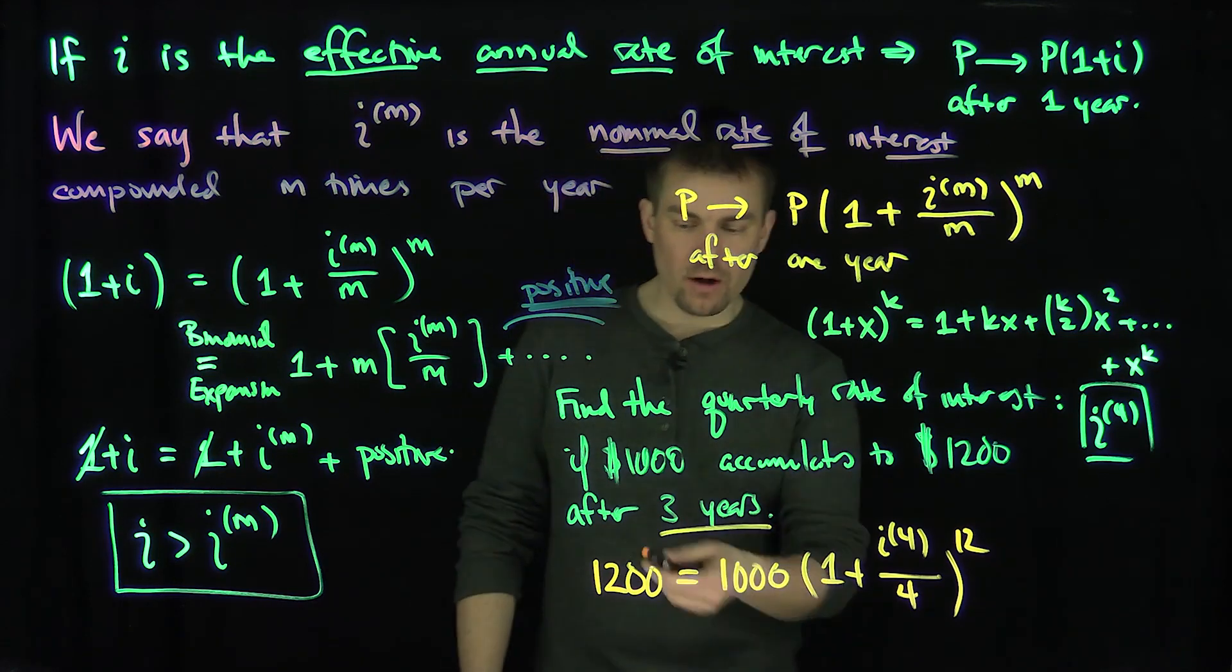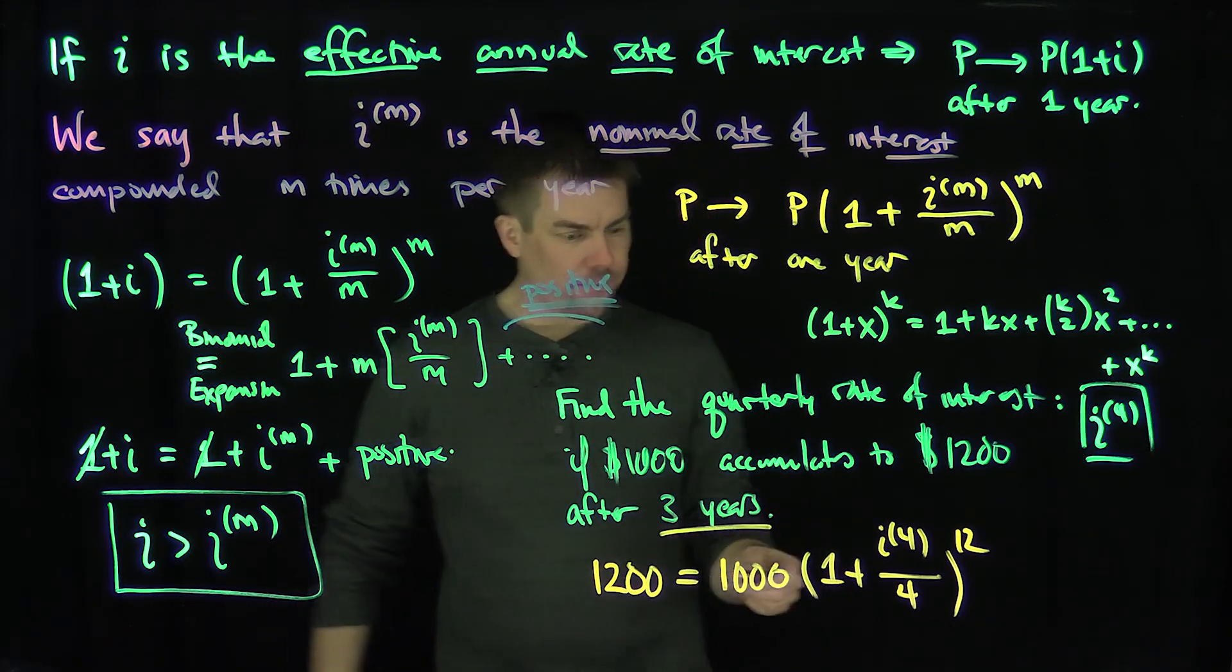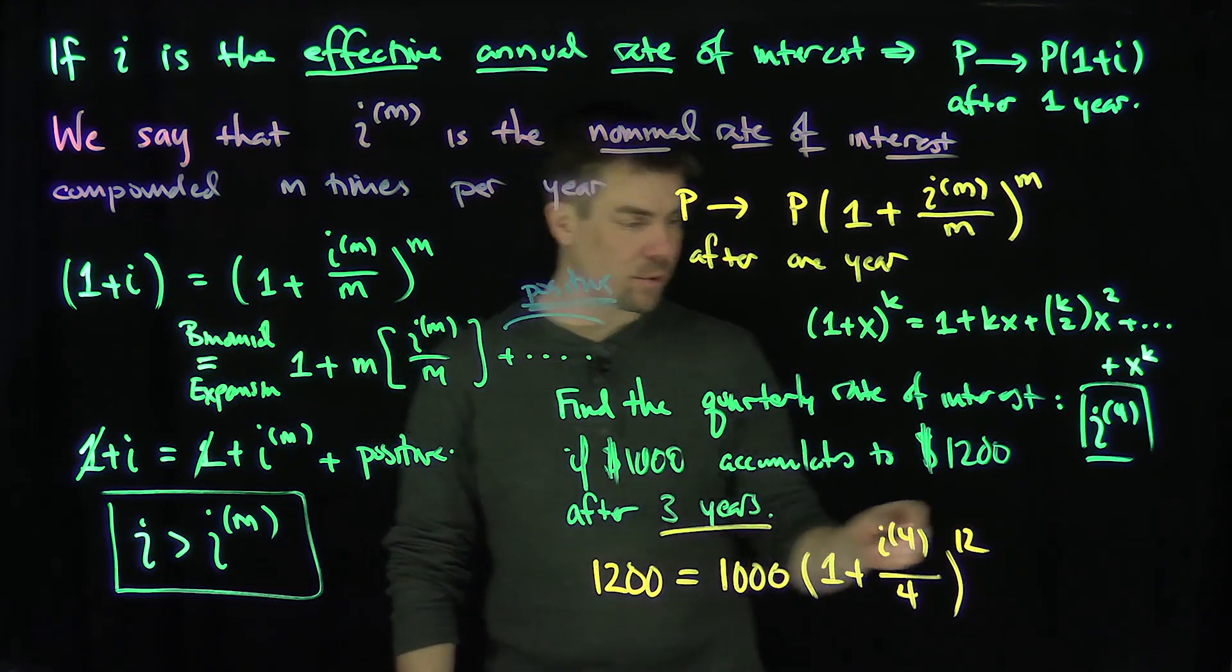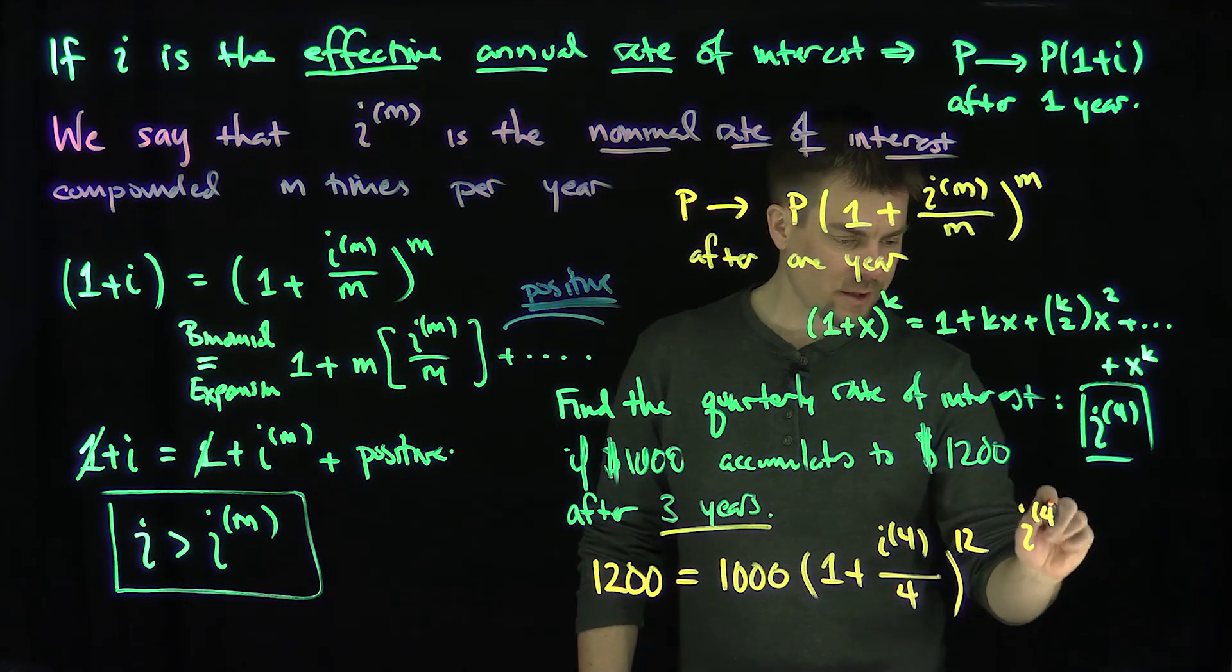And now this is an algebraic equation we can solve for i_4. We first divide by 1,000, take the 12th root, subtract 1, multiply by 4, and that would be our answer. And if you plug this into the calculator, you'll see i_4 is approximately equal to 6.1%.